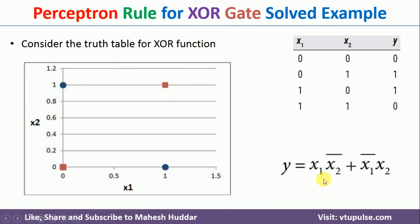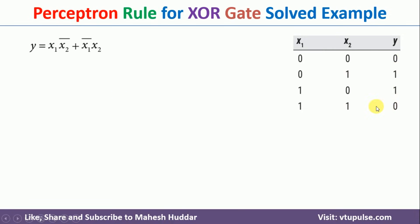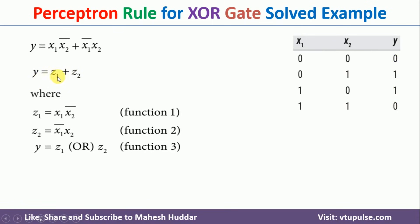Hence, we will use this particular equation: Y = X1·X̄2 + X̄1·X2. This equation will give the required output. We will rewrite it as Y = Z1 + Z2, where Z1 is the first part and Z2 is the second part. Once we get Z1 and Z2, we will combine them to get the final Y.